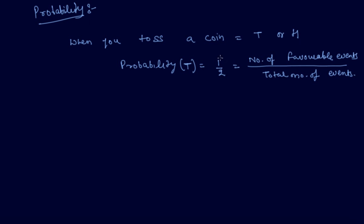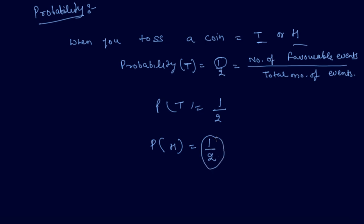The number of favourable events for tail can come in one way only, and the total number of events is 2, so the probability of getting a tail is 1/2. Similarly, the probability of getting a head will also be 1/2. There is always an equal probability of getting a tail or head, given that the coin is not a biased coin.